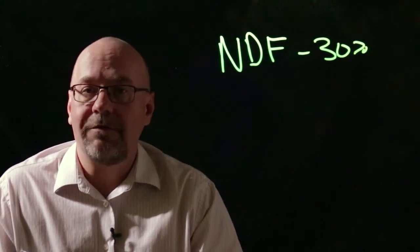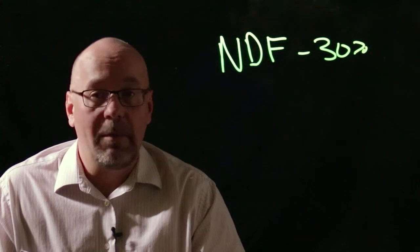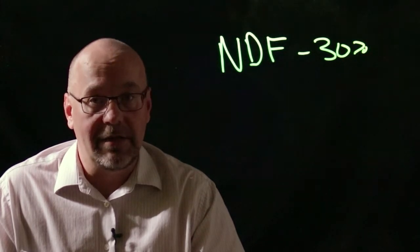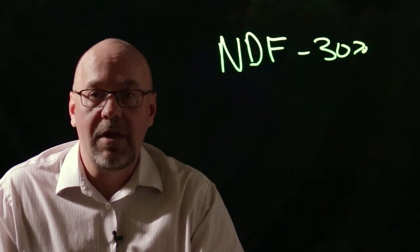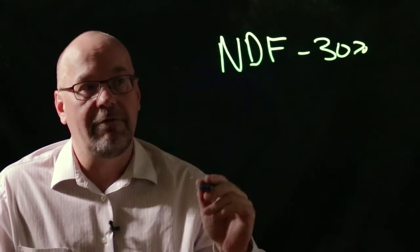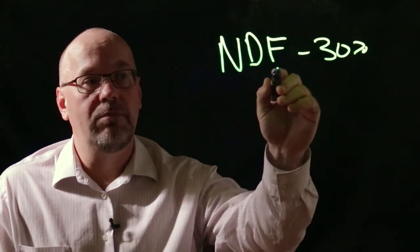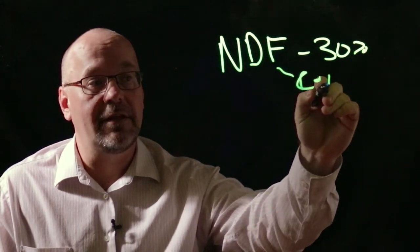Now NDF comprises two different fractions of fiber. Primarily it's cellulose and hemicellulose. So cellulose is that portion that's not readily available and hemicellulose is the portion that is a little bit readily available. So this measures both cellulose and hemicellulose.